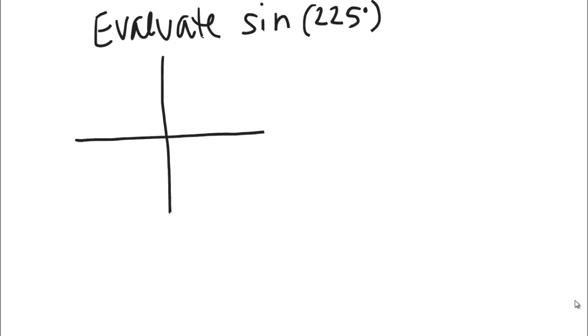How about sine of 225 degrees? Let's go through the same process we talked about before. Let's first sketch our angle. This is why sketching was so important. 225 lands here, right about, and that's quadrant 3.